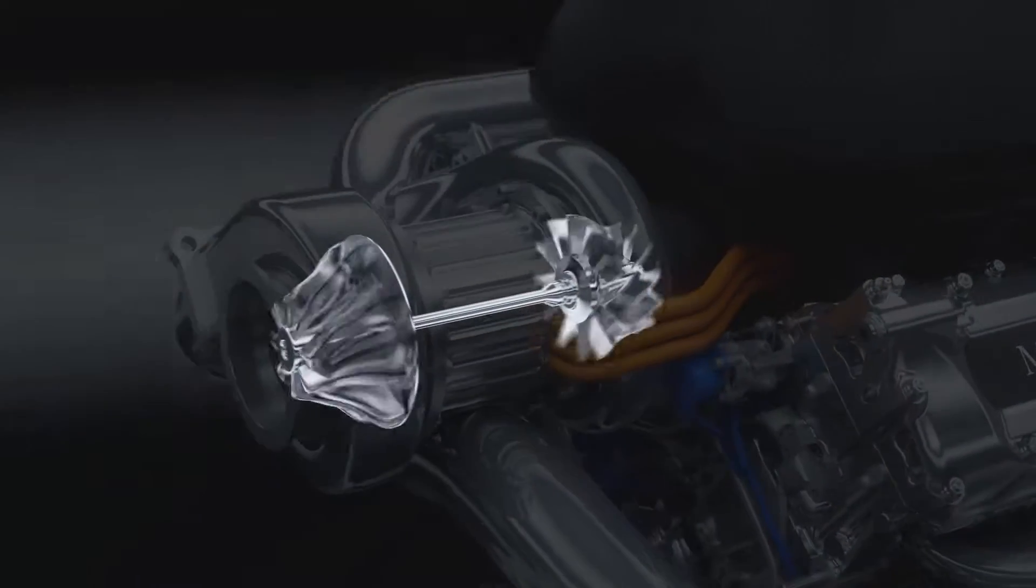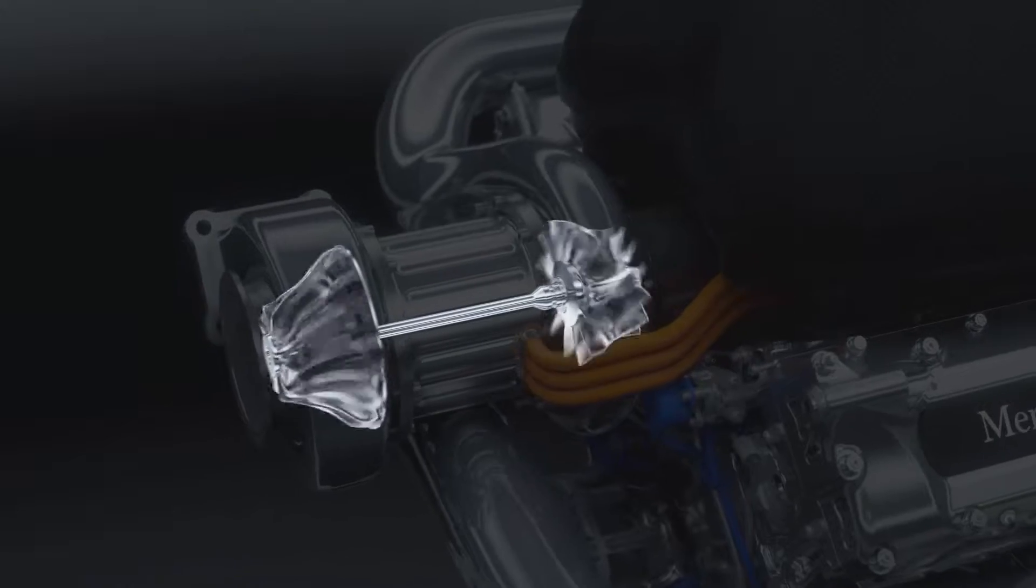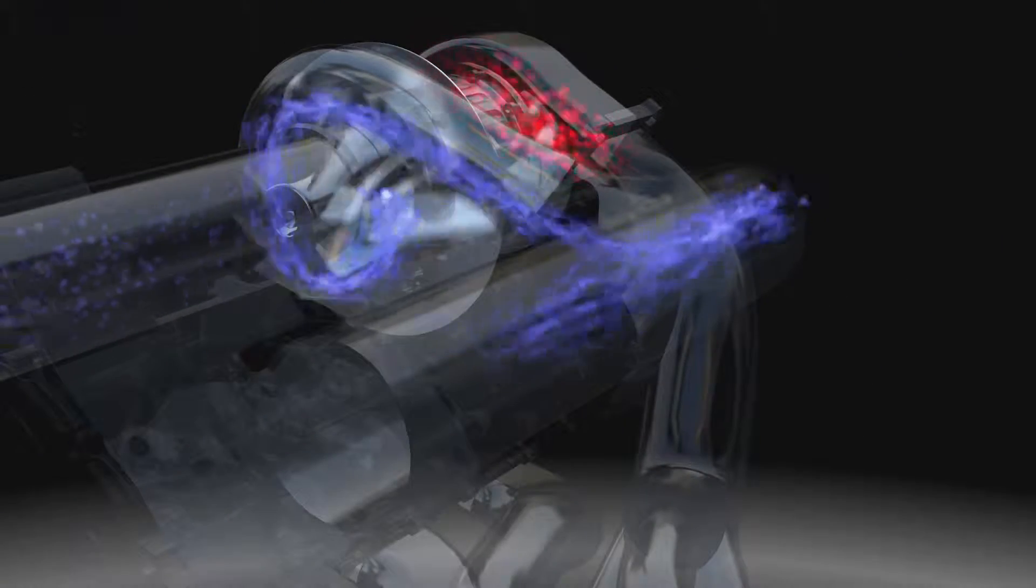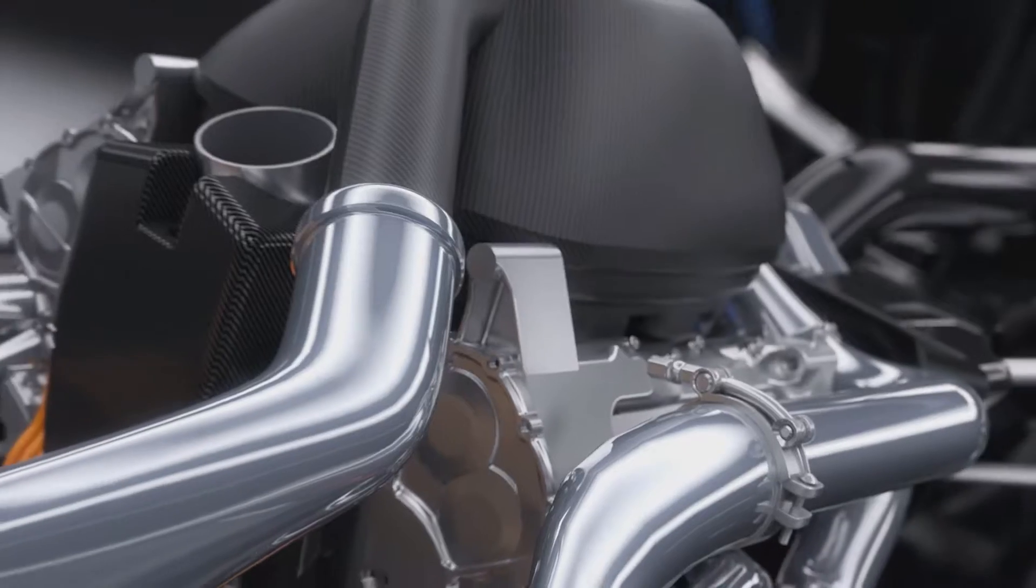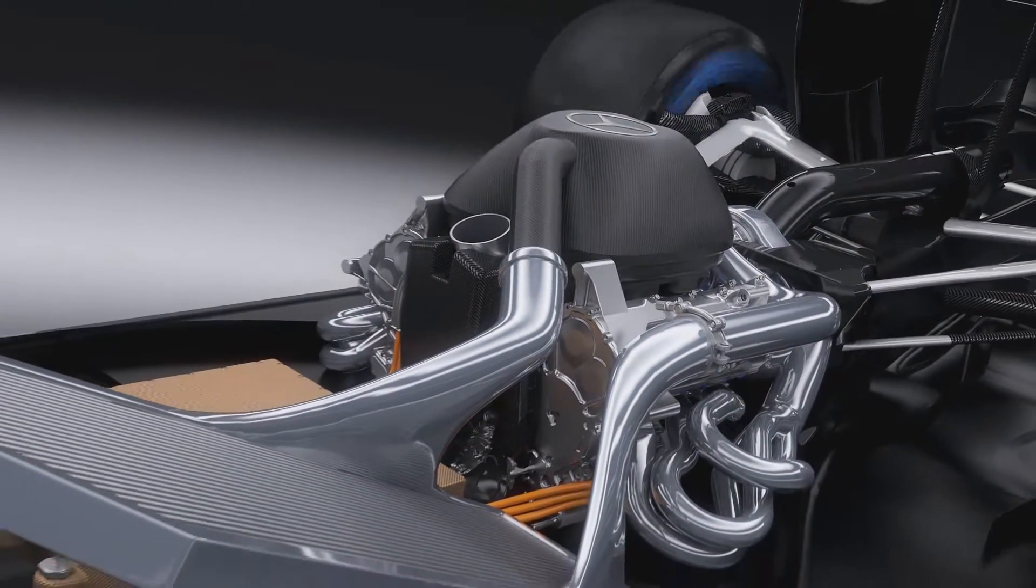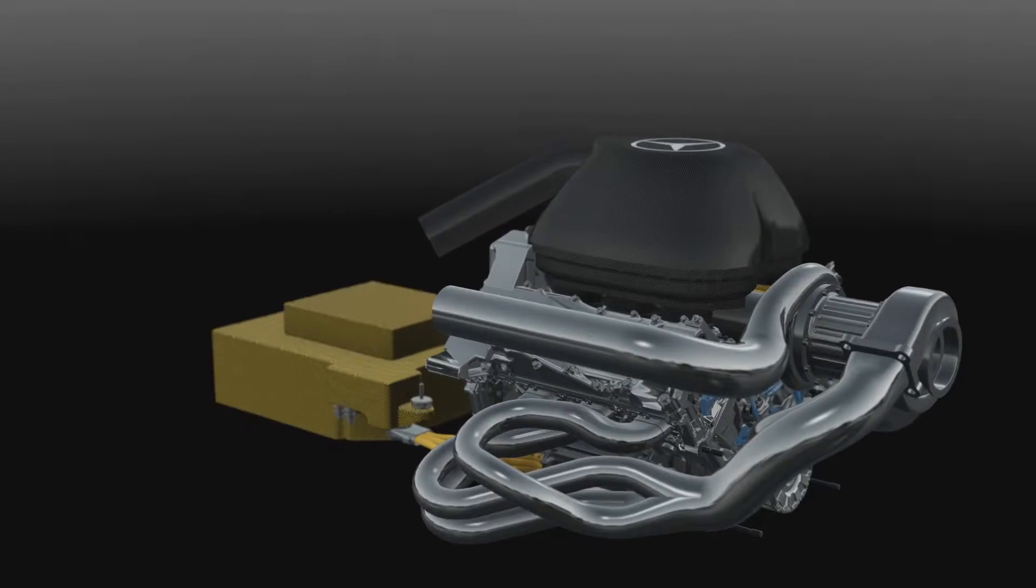It is achieved with a downsized 1.6-litre turbo hybrid engine. The turbo uses exhaust gases to drive a compressor to push more air and therefore more oxygen into the engine. Together with high-pressure direct fuel injection, this makes combustion more efficient, delivering more power using less fuel.